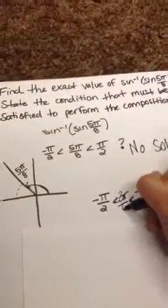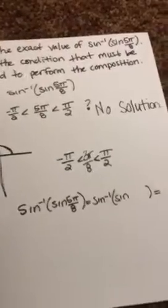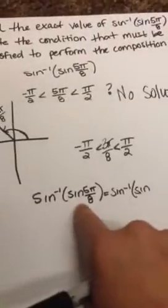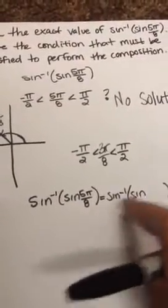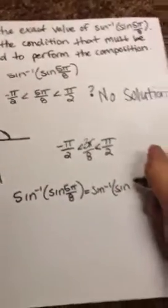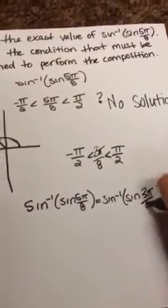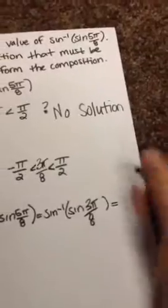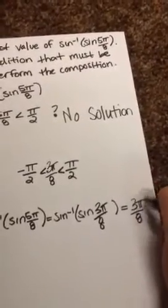And so what you want to do is check if 3π over 8 fits the domain. And it does. So you have sine inverse sine 5π over 8 equals sine inverse sine 3π over 8 equals 3π over 8. And that's your answer.